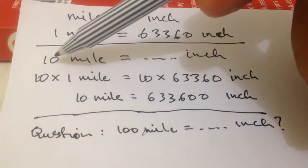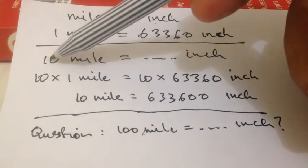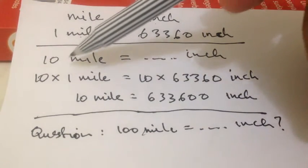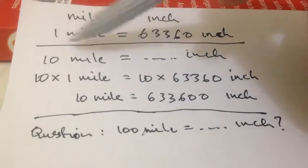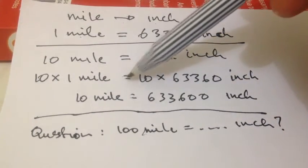To solve this problem, first thing that we need to do is put this 10 over here. And then we multiply it with 1 mile, which we have from this equation.